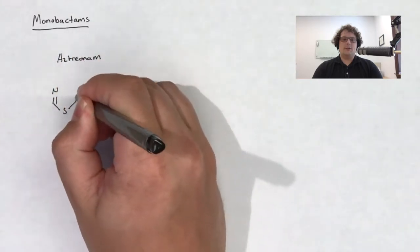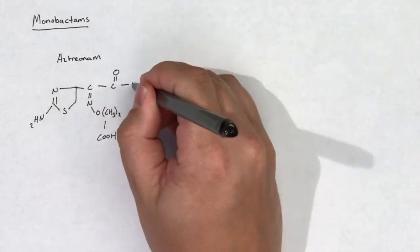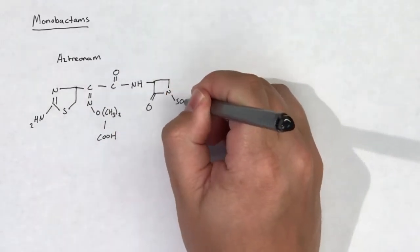Monobactams have a unique structure that sets them apart from other beta-lactams, like penicillins or cephalosporins. Monobactams have a monocyclic beta-lactam ring.